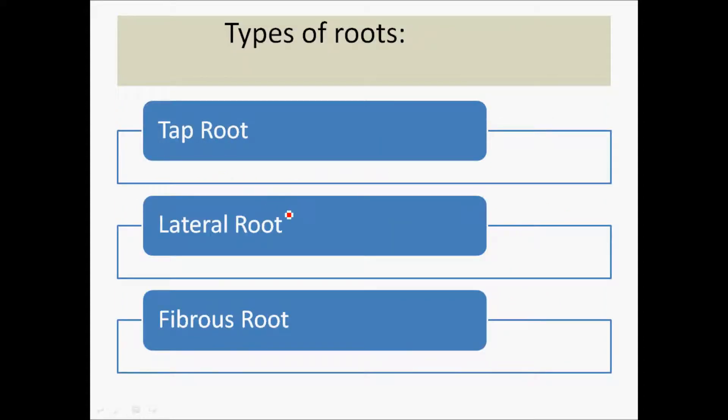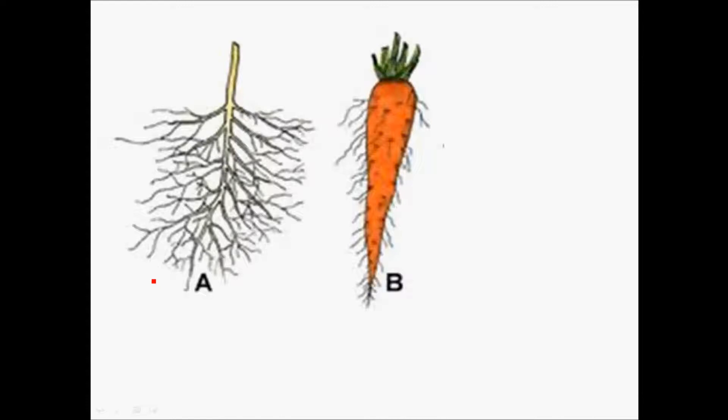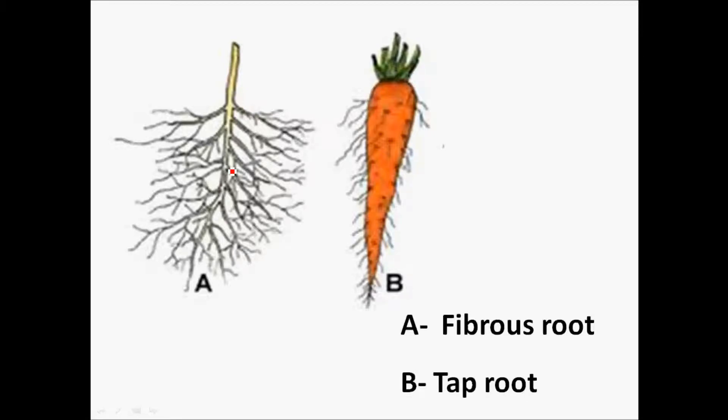Now moving on to the types of roots, we are basically classifying roots into tap root, lateral root and fibrous root. Can we guess how the first one looks like from the diagram? It has so many fibers, so definitely it is fibrous roots. The second one, the primary root has grown in size, this is called tap root, which is sometimes edible.